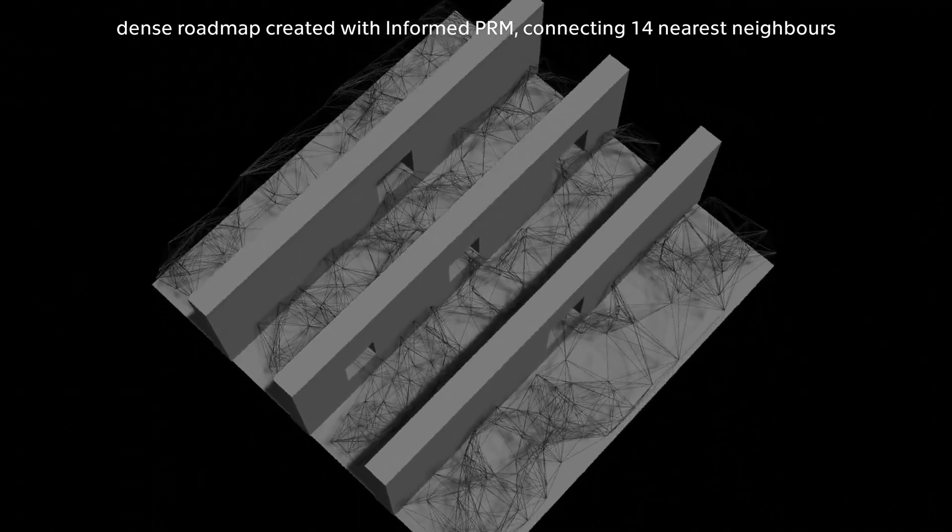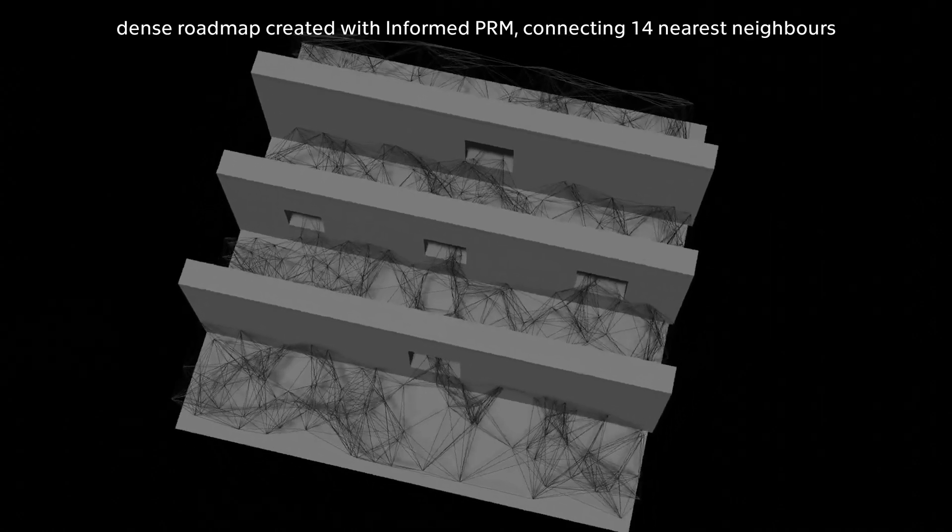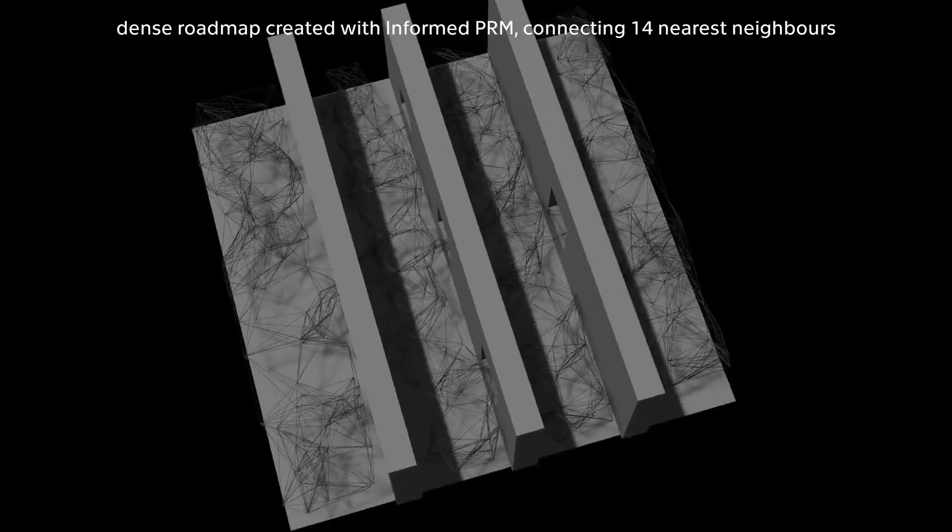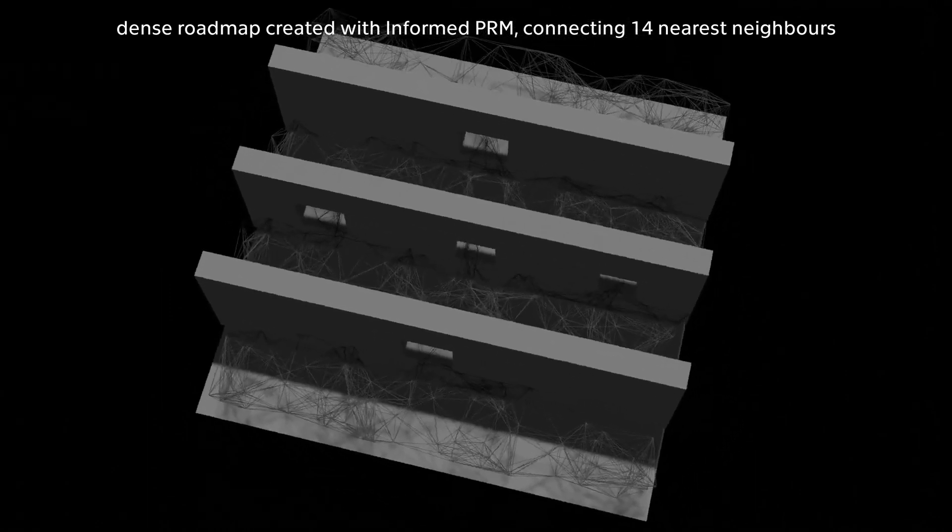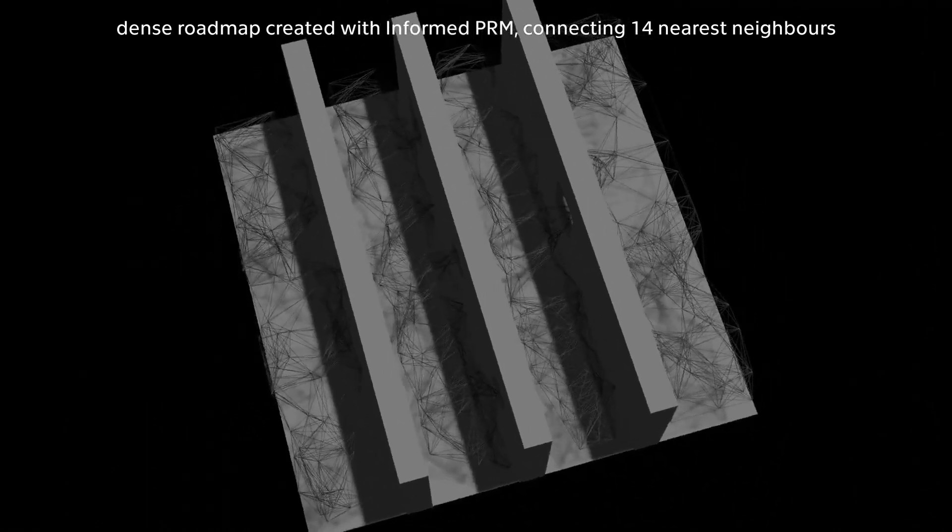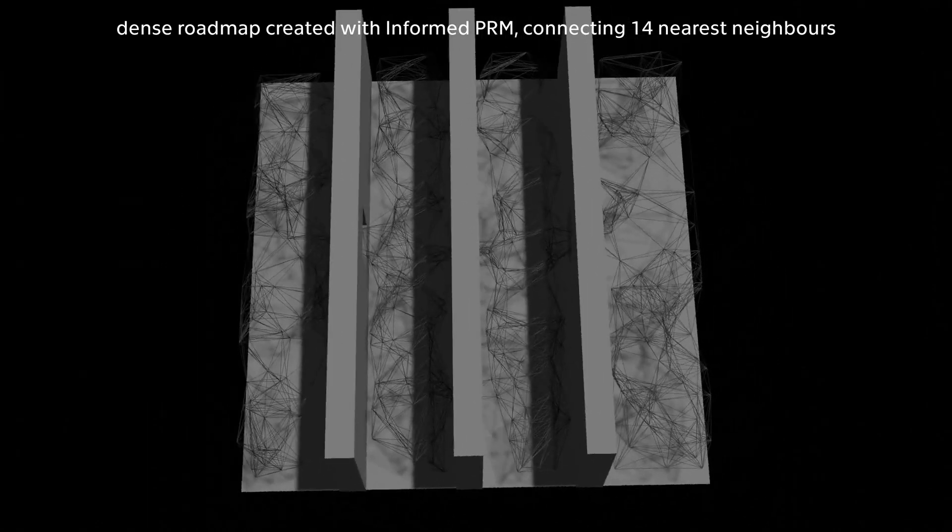In order to accurately represent an environment, a graph-based representation called roadmap is commonly used. Challenging environments containing multiple narrow passages require a densely sampled roadmap to be solved. However, searching for multiple paths in a dense roadmap is computationally expensive and requires an exhaustive filtering process to prune all redundant paths.